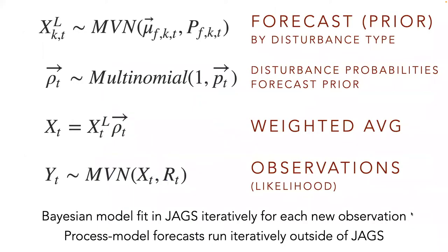Mathematically, the algorithm is generalized to forecasts of multiple carbon pools simultaneously, summarized using a multivariate normal and k alternative disturbance types. Here, xl is our latent estimate of the forecast mean and covariance at time t for disturbance type k. The posterior probability of being in each state, rho, is represented using a multinomial distribution based on the forecast prior p. Xl times rho then produces the weighted mixture of normals that is compared to the observations y with observation error covariance matrix r.